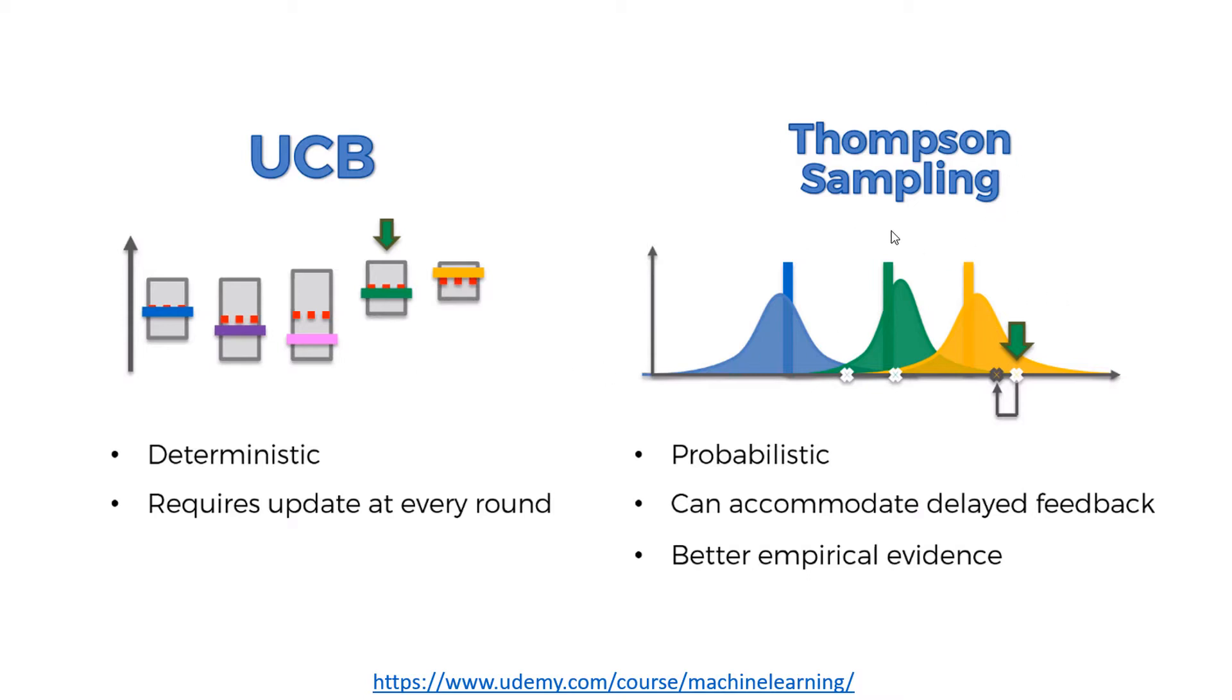Whereas in Thompson Sampling, you can accommodate delayed feedback. As it's a probabilistic algorithm, it's not going to always select the best distribution. Sometimes you can have a sample falling down here, and the green sample may fall up here. Therefore, you're going to select the green distribution instead of the yellow distribution. It's less likely, but that can happen. So you won't get stuck as you would here.